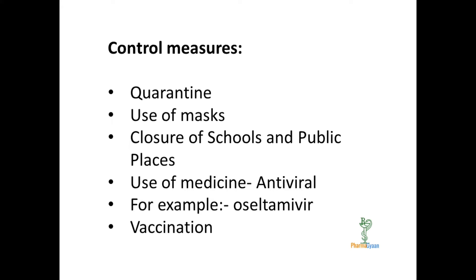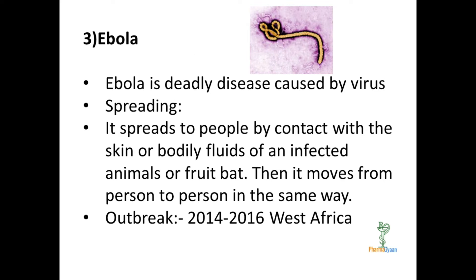Control measures for swine flu included quarantine, use of masks, closure of schools and public places, and use of antiviral medicines such as oseltamivir. Mass vaccination programs were carried out in the US. Nowadays a vaccine is available for swine flu, and one shot per year is recommended.